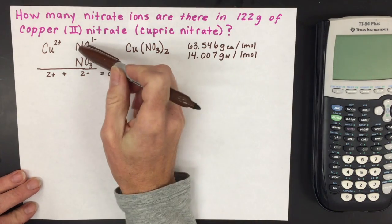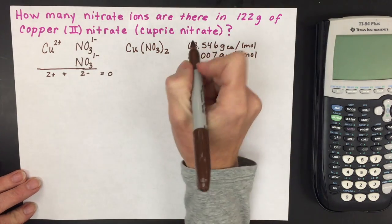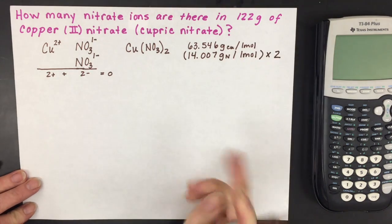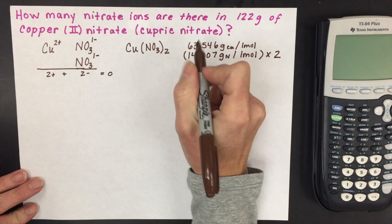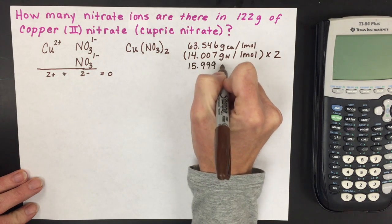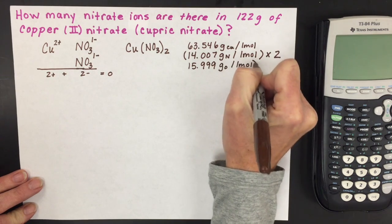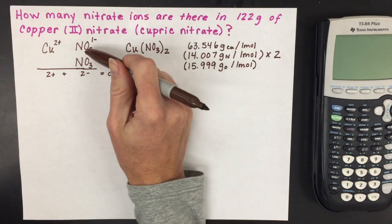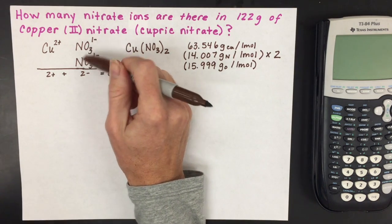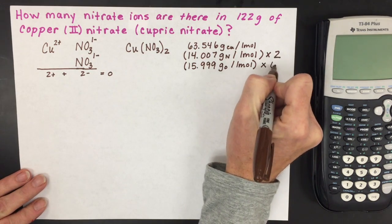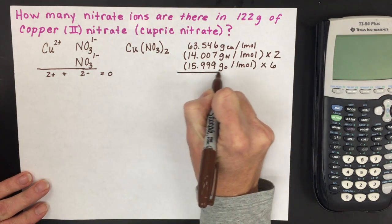In this compound, we have two nitrogen atoms from the nitrate ions. Oxygen is 15.999 grams per mole. You need to be careful to get the correct number of oxygens. There are three oxygens per nitrate, so that's six total oxygen atoms.